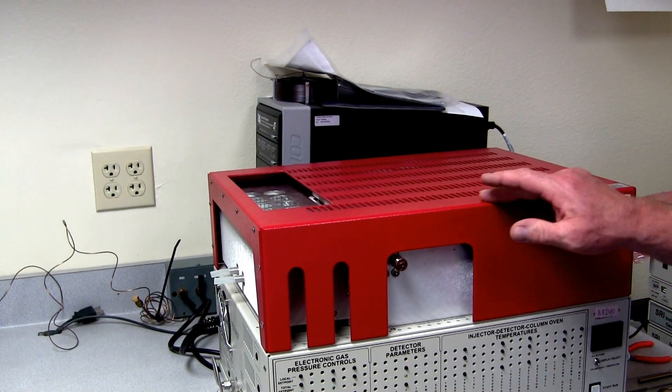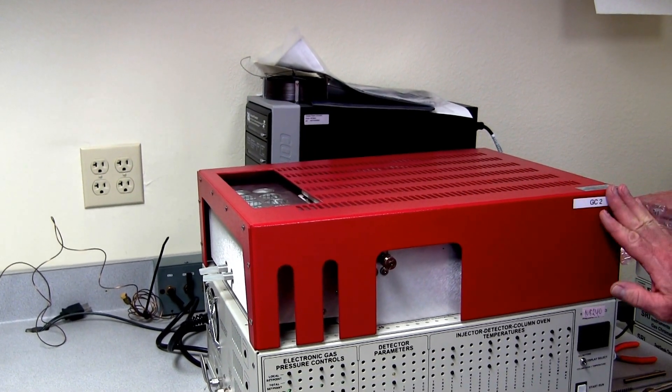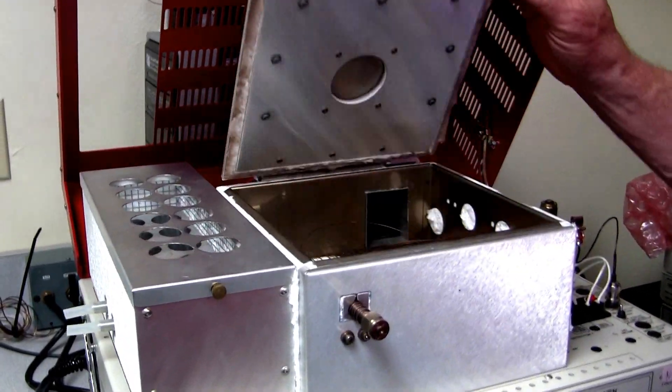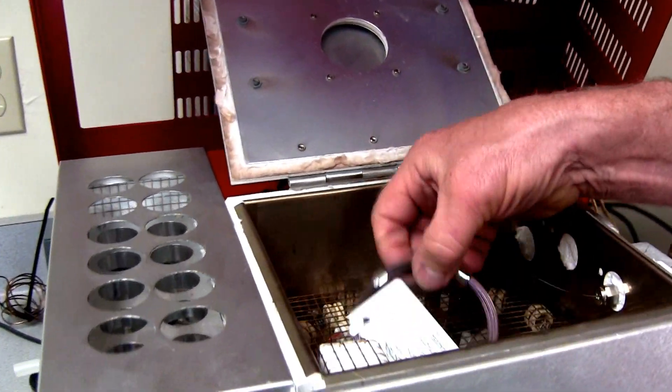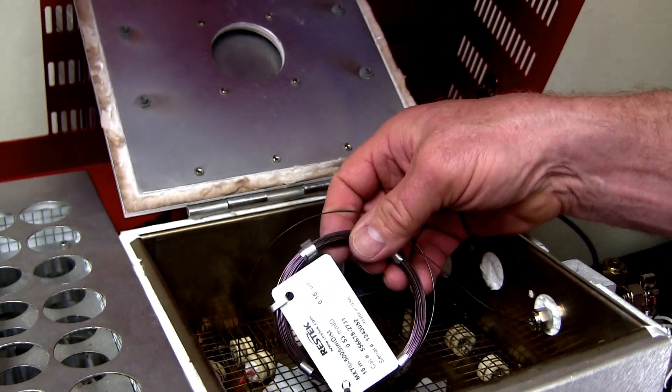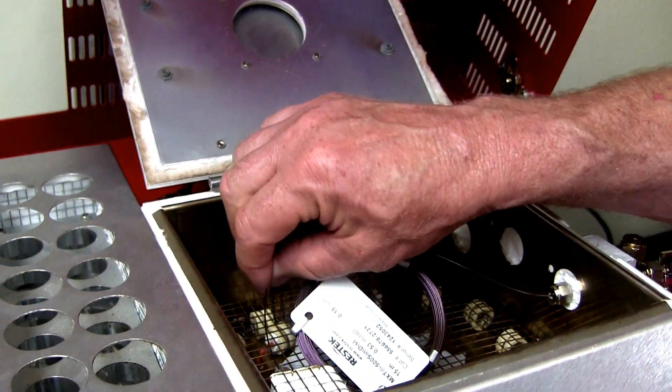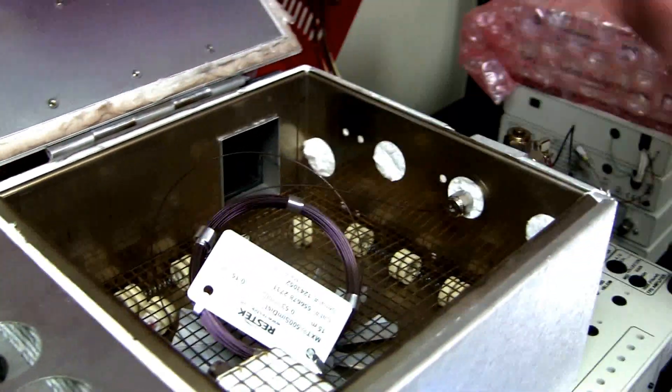So this is the SRI 8610 gas chromatograph and this is the column oven. You can see that in the column oven there is currently a column connected between the injector and the detector.